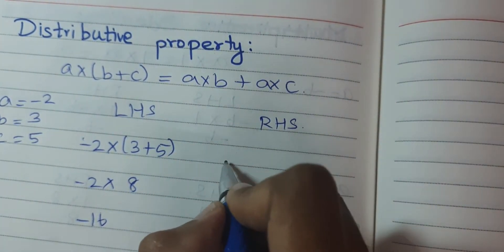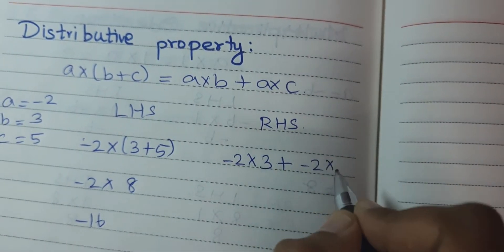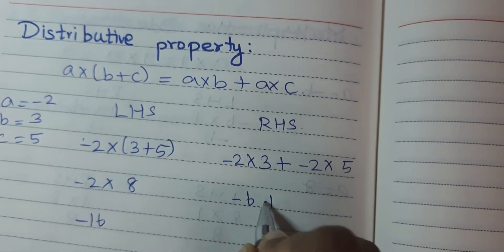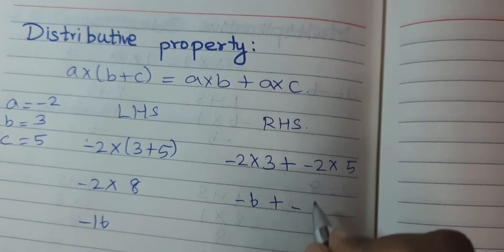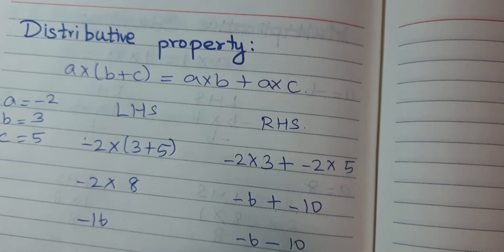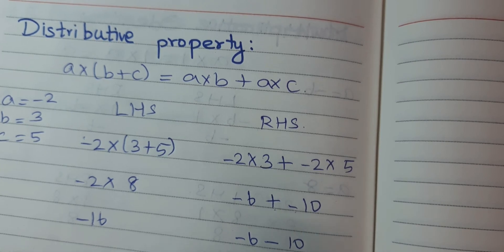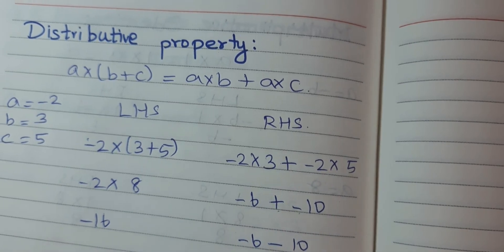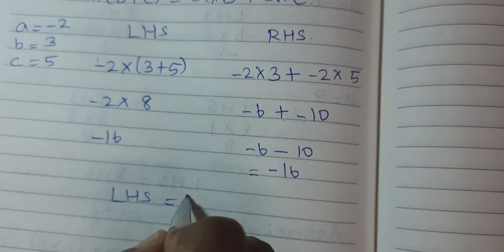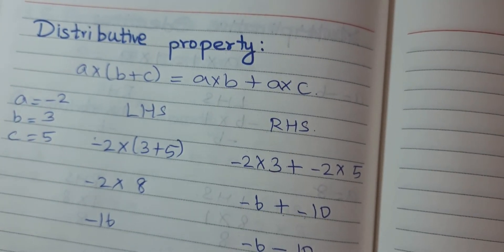RHS: A × B + A × C = (−2 × 3) + (−2 × 5) = −6 + (−10) = −16. LHS equals RHS, so the distributive property condition is also satisfied. These are the properties of multiplication of integers.